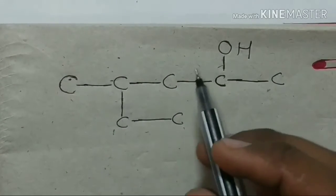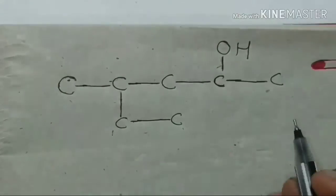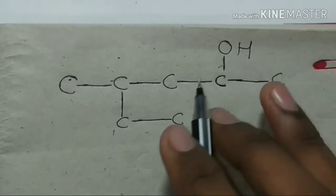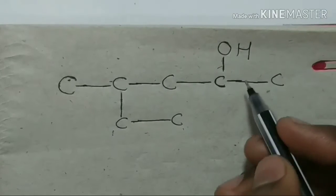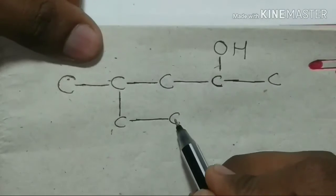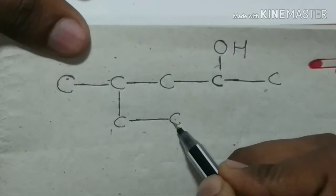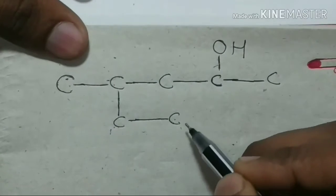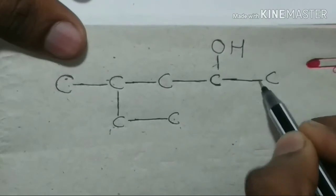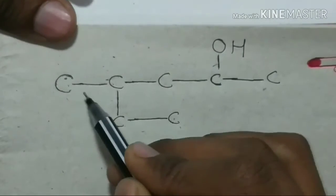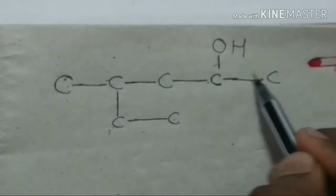We need to get the numbering. First of all, we will start numbering from the primary carbon. We need to start with 6 carbons. Here, you have to count: 1, 2, 3, 4, 5 — let's count 5 carbons.